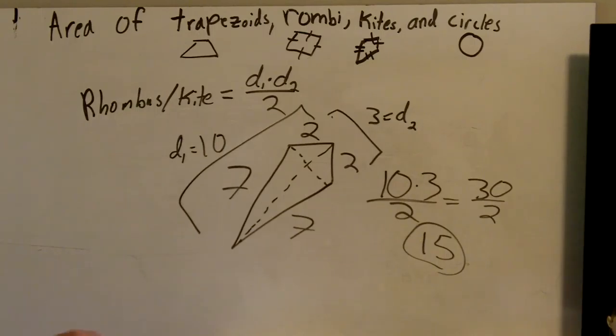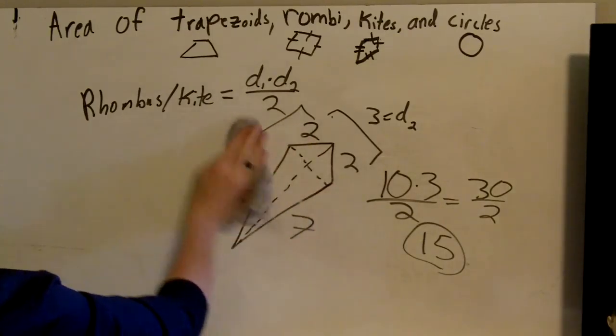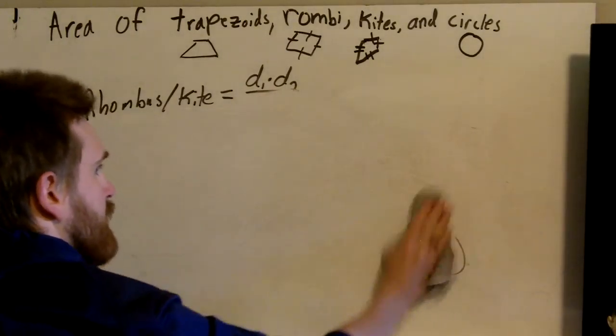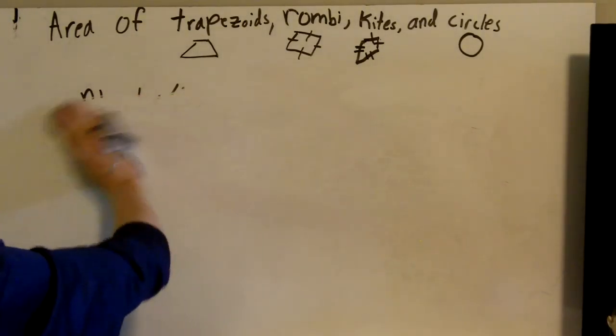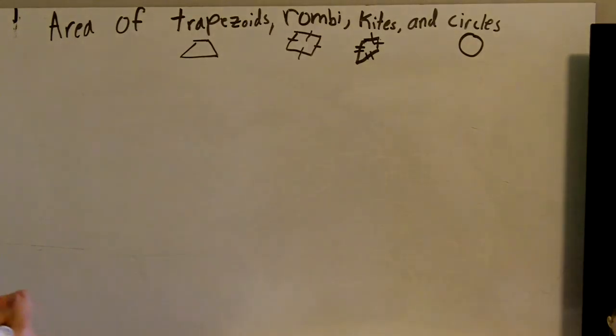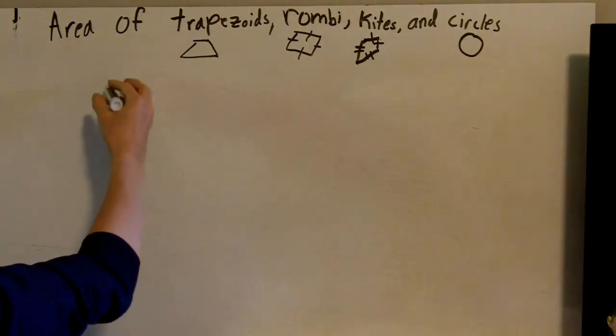Now there are times that you may get that this part of the diagonal is a certain amount. You just have to add those together to get the full length of the diagonal sometimes. I don't think I'm going to give you any like that, but just in case you get in the future. And then circle, our last type.